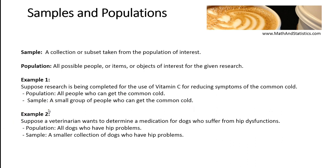In the second example, suppose you're a veterinarian who wants to determine a new medication for dogs who suffer from hip issues or hip dysfunctions. In this case, your population of interest is actually all dogs who have problems with their hips. When you take a sample, your sample is going to come from that particular population and will be a smaller collection containing dogs who have hip problems. As you can see, the population is defined by what research you're doing and it's called your population of interest.